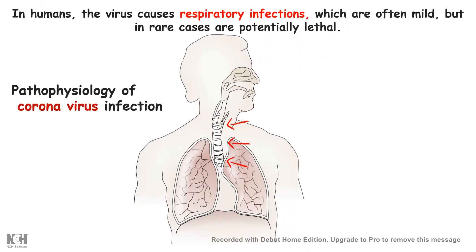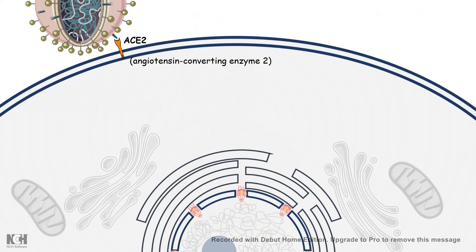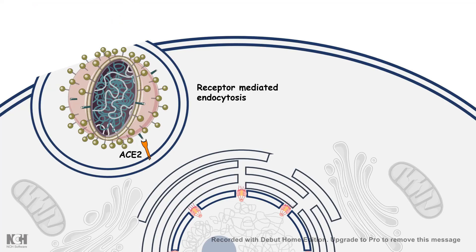These coronaviruses specially target the upper respiratory tract and the lungs. On a particular cell surface, there are specific receptors which act as docking sites. In this case, the S2 receptor, or angiotensin-converting enzyme receptor, is the docking site for the S-proteins of this virus, leading to receptor-mediated endocytosis as the way of entry into the host cell.